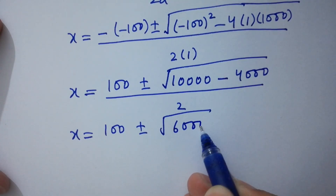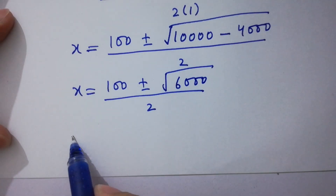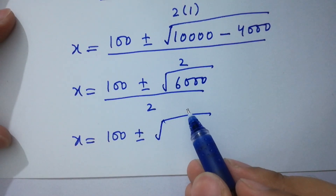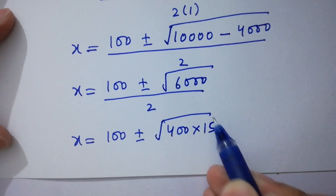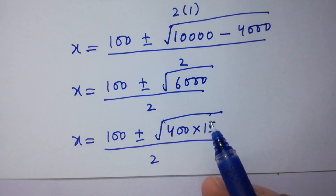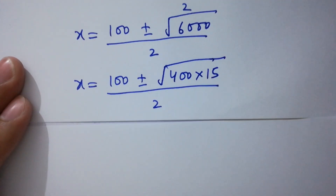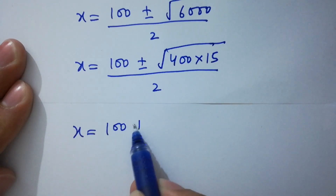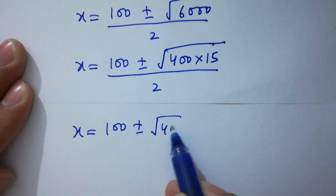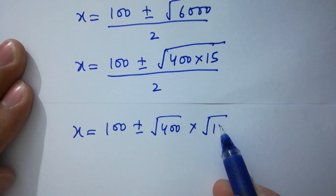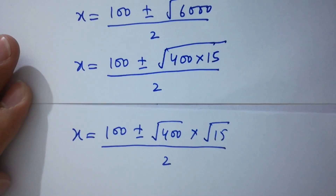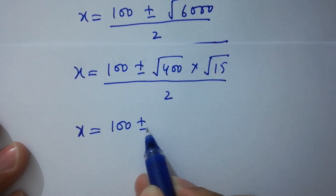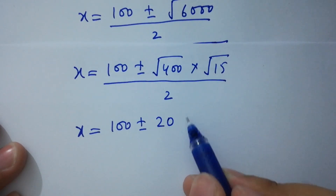Now, 6000 can be written as 400 times 15, so x equals 100 plus or minus square root of (400 times 15) over 2, which equals 100 plus or minus square root of 400 times square root of 15 over 2.